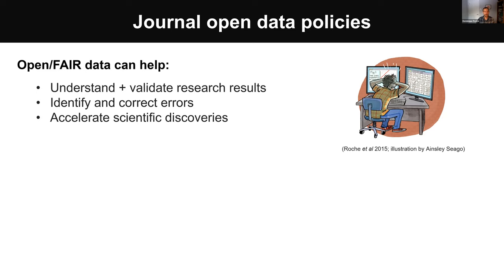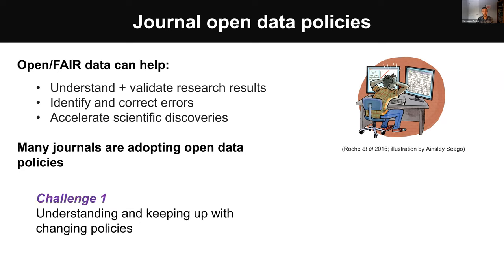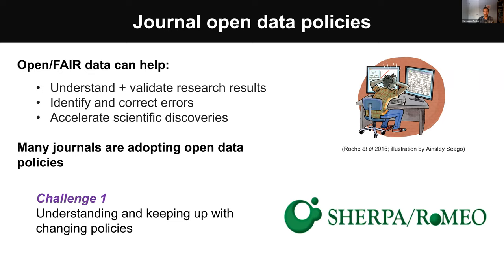Open and fair data are increasingly popular with both funders and publishers, because they can help us understand and validate research results, identify and correct errors, and they're broadly acknowledged to accelerate scientific discoveries. Because of that, more and more journals are adopting open data policies, especially in my field, which is ecology and evolutionary biology. One key challenge is to understand these policies, because they're not always straightforward, and also to keep up with changes in these policies across lots of different journals.